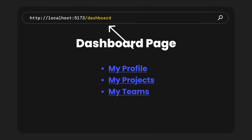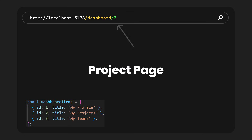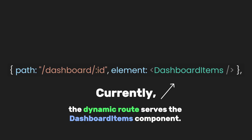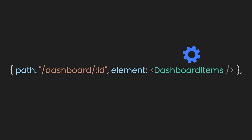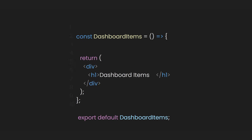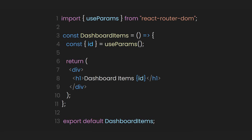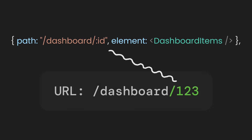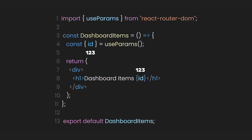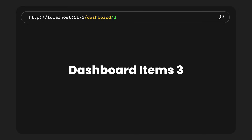If you go to the slash dashboard page, you'll see the headings as links. Clicking on a link will take you to a page with the corresponding ID. For example, slash dashboard slash 2 is for the Project page, and slash dashboard slash 3 is for the Teams page. Currently, the dynamic route serves the DashboardItems component. Let's add more functionality to it by importing the useParams hook from react-router-dom. The useParams function returns an object containing key-value pairs of the dynamic parameters from the current URL. For example, if the route pattern is slash dashboard slash colon ID and the URL is slash dashboard slash 123, then params.id will be 123.